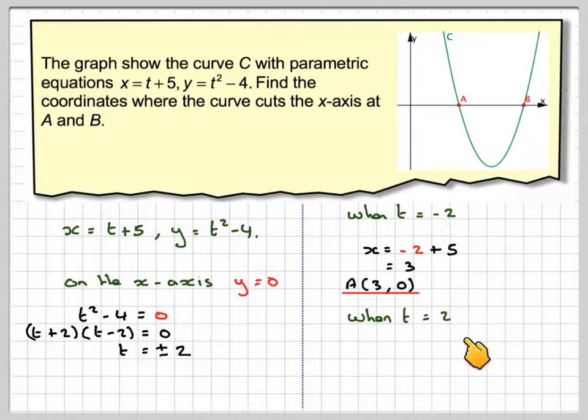When t equals 2, x equals 2 plus 5, which is 7, giving point B(7, 0).